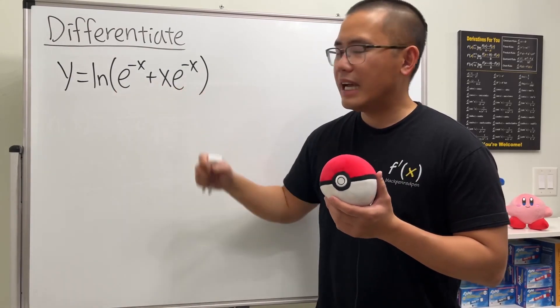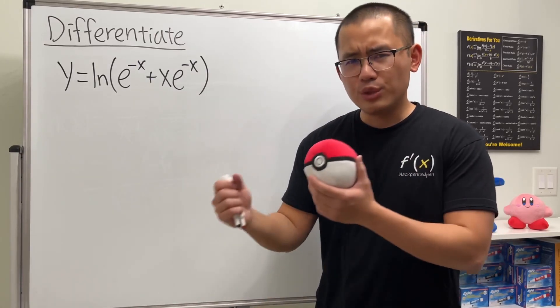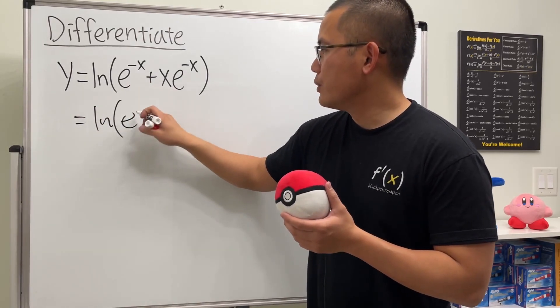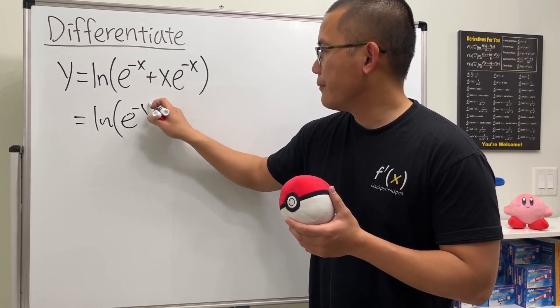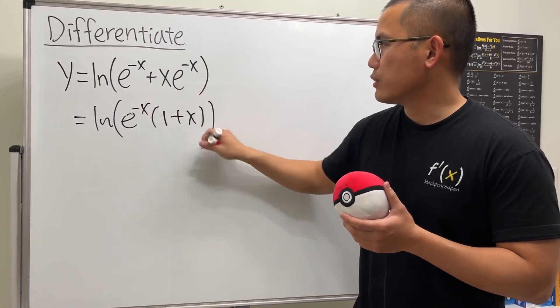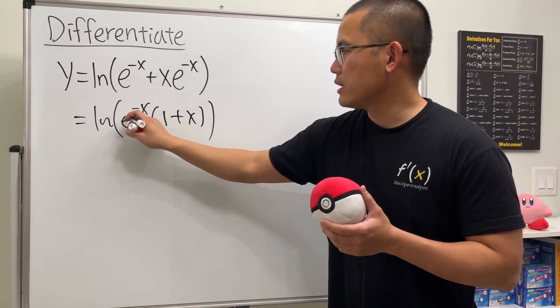We see this and that, they have the e to the negative x, so we can factor that out. So this right here is ln of e to the negative x, and then this right here will just become 1, and then we just have to add x. So again, we just factor out e to the negative x.